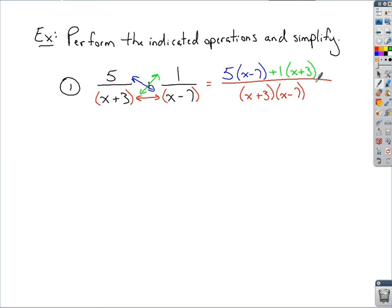We're really writing that 1 as optional because that 1 distributes through and we just end up with x plus 3. If you go ahead and set this up further where we're distributing things out in the numerator, distribute the 5 through.